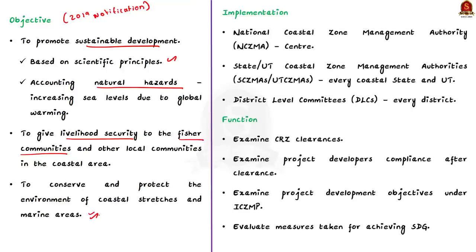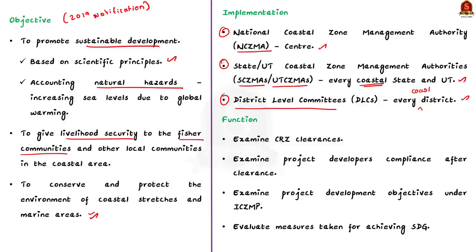The coastal regulation zone is implemented through three institutions. First, the National Coastal Zone Management Authority at the central level. Second, the State or Union Territory Coastal Zone Management Authorities in every coastal state and union territory. And third, at the district level, District Level Committees. These three bodies implement the coastal regulation zone notification.